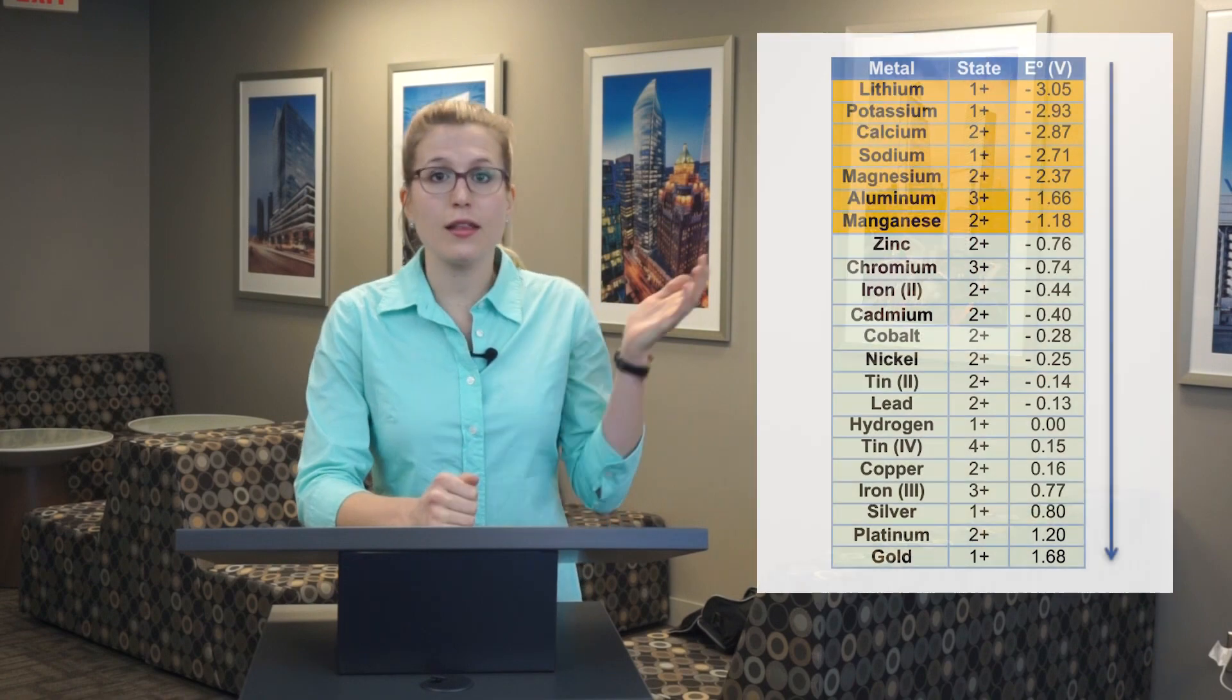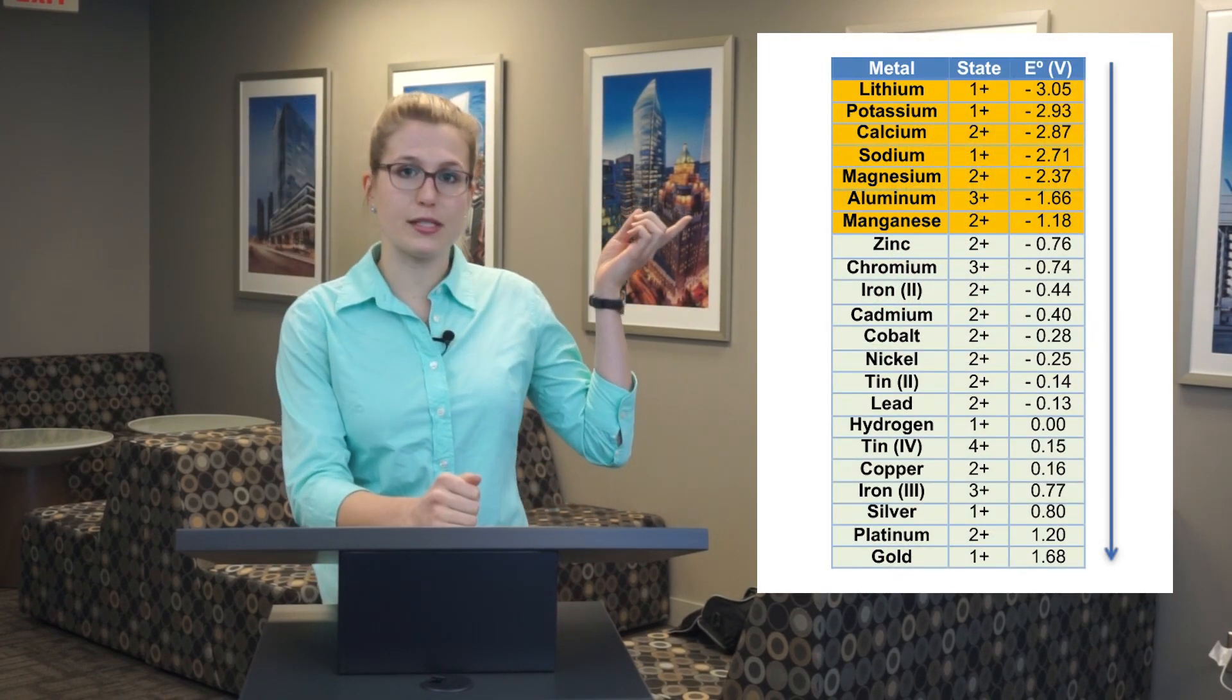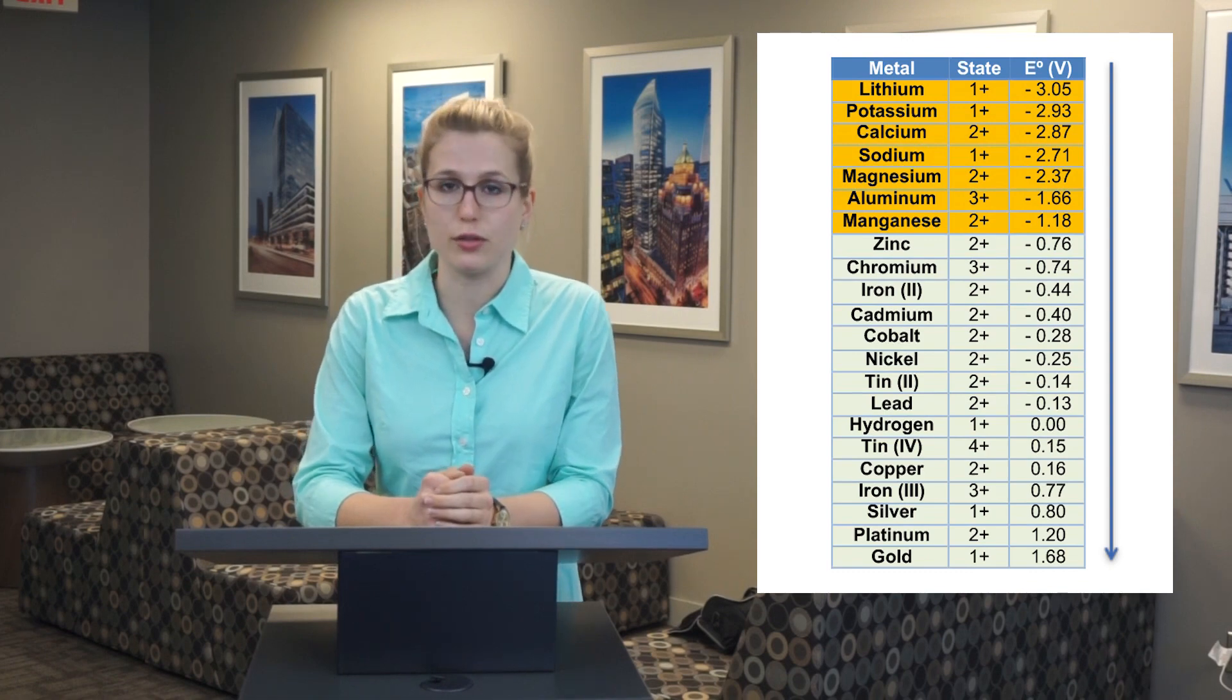The significance of putting metals in order of their standard reduction potentials is you can visually see which metals are more likely to be electrowon from solution. In the electrochemical series shown here, zinc is the last metal up the series that can be electrowon from solution. All of the metals above zinc cannot.